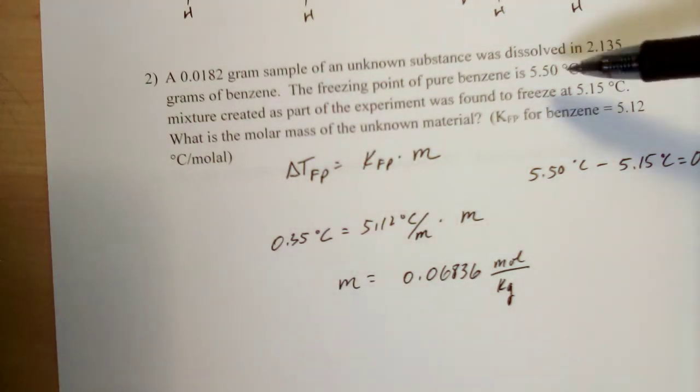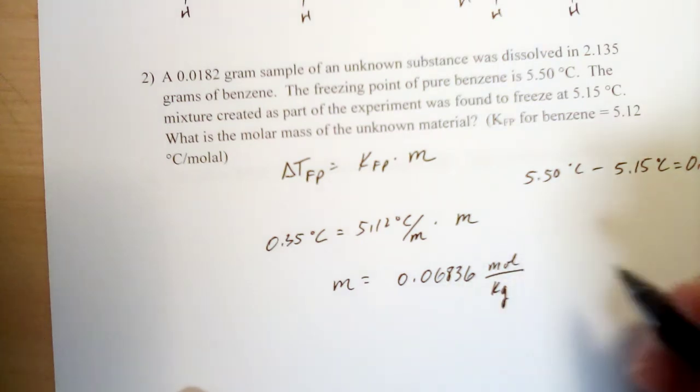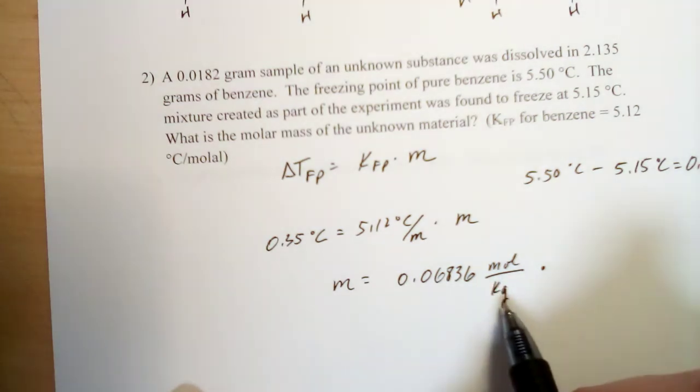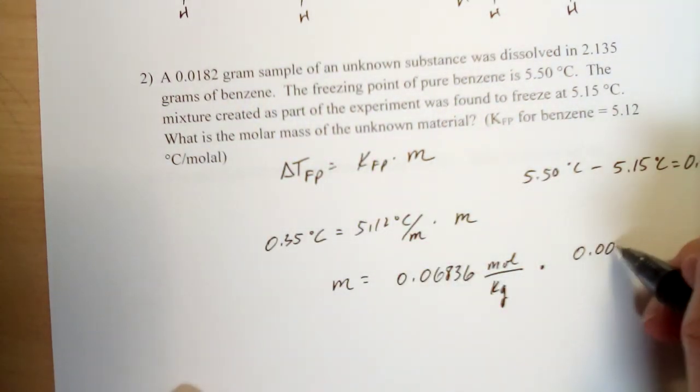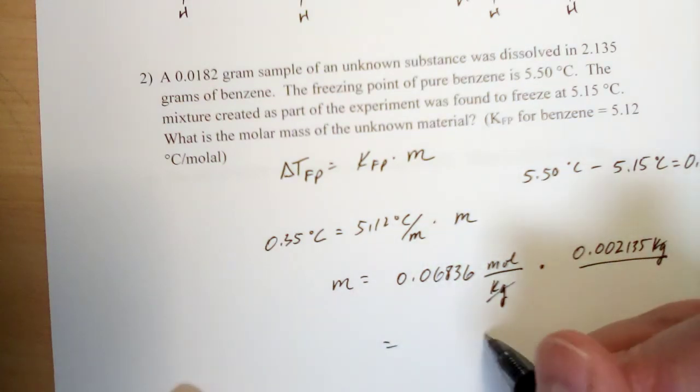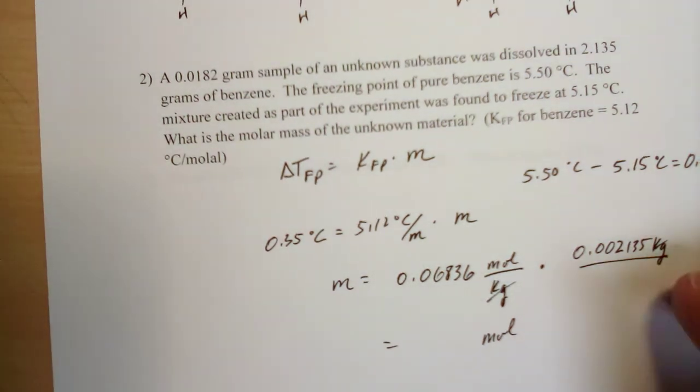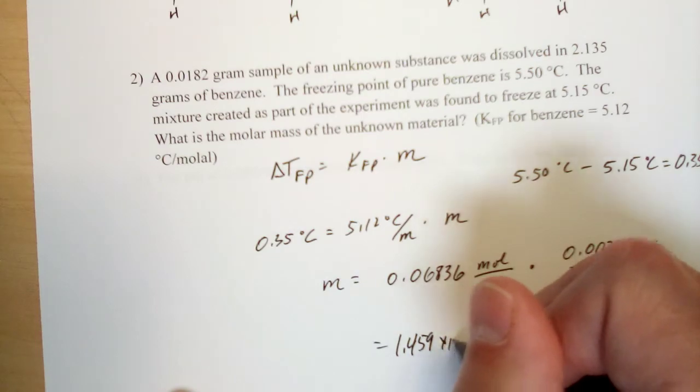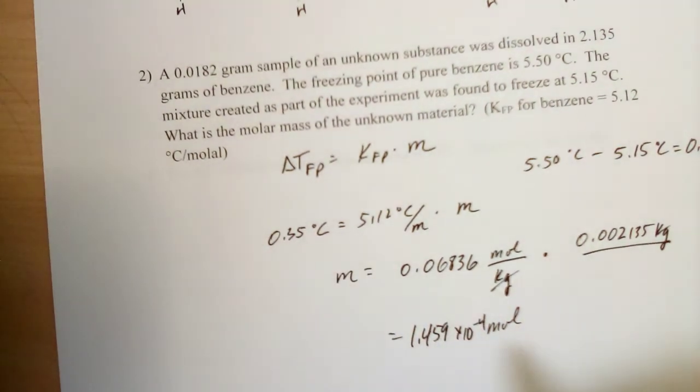And you should know molality units are moles per kilogram—is particularly important for this problem because to get to the molar mass, which is what we're asked in the problem, we need to figure out how many moles were in our sample. And the way we can do that is by taking the molality of the solution we got through the colligative properties and multiplying by how many kilograms of solvent were used to cancel out the kilograms on the bottom of our units. So 2.135 grams of benzene would be 0.002135 kilograms of benzene. Kilograms is going to cancel out there, and this will tell us how many moles of the unknown were in our sample. So I multiply that out off screen here. I get 1.459, keeping a couple extra sig figs here, times 10 to the minus fourth moles.